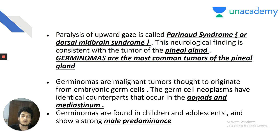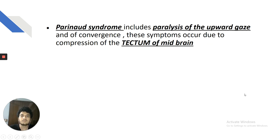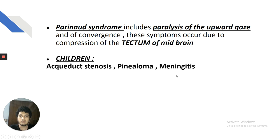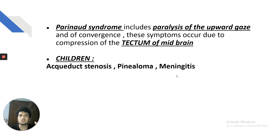Pineal germinoma with precocious puberty is most commonly seen in boys, consistent with our 5-year-old male patient. Parinaud syndrome includes paralysis of upward gaze and convergence due to compression of the midbrain tectum. Precocious puberty may occur in males due to excess beta-HCG production. The compressive symptoms vary by age group — for a child, think pinealoma; for an elderly patient, think vascular accident or posterior fossa aneurysm.